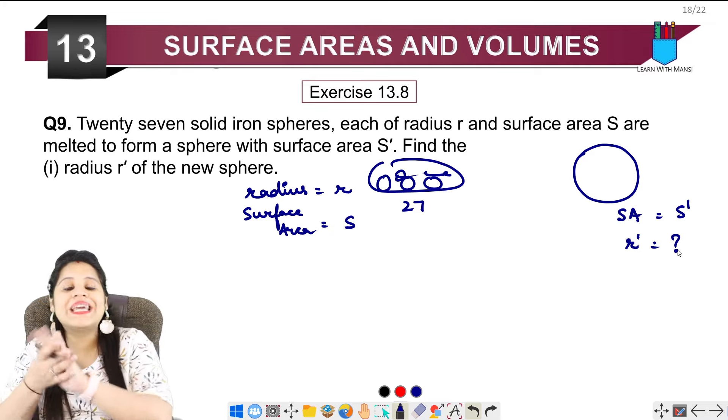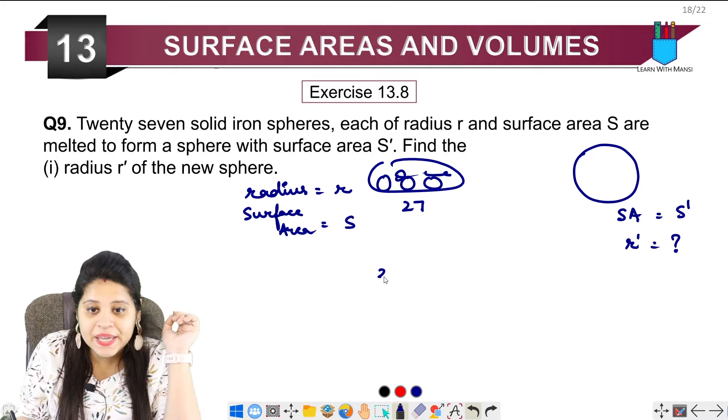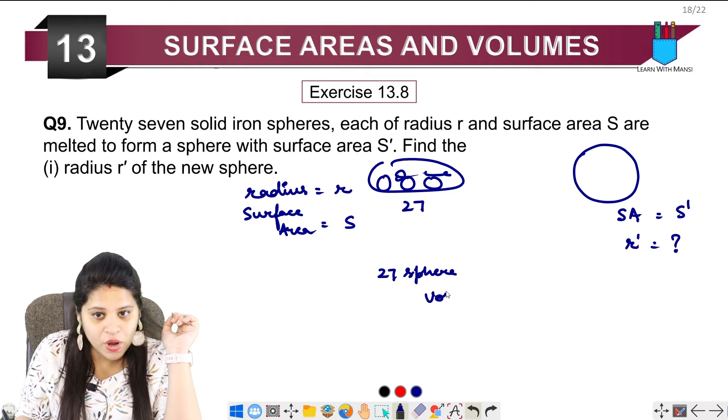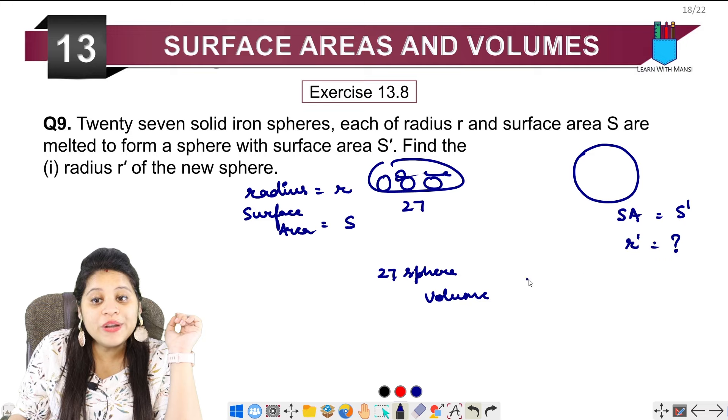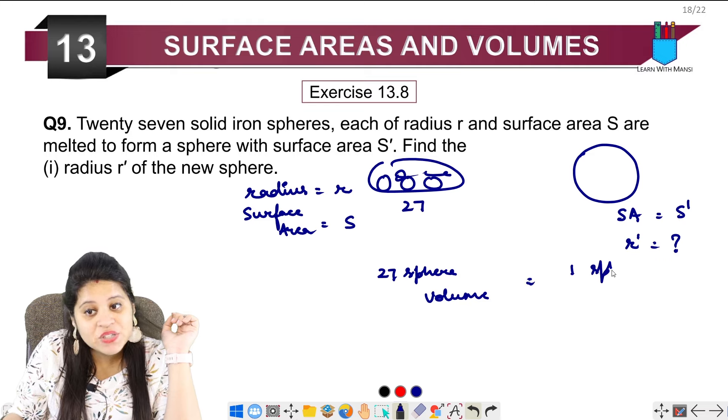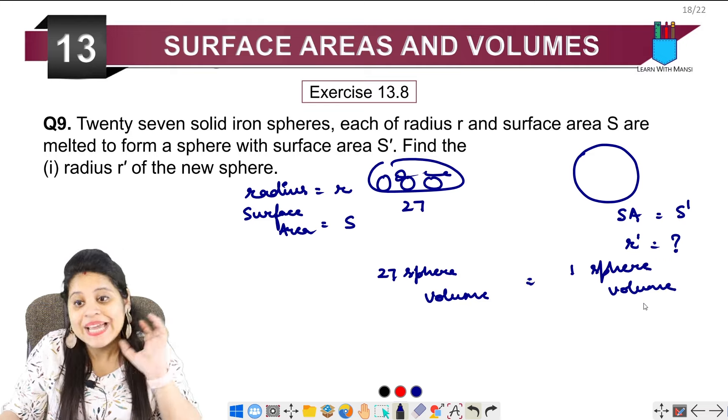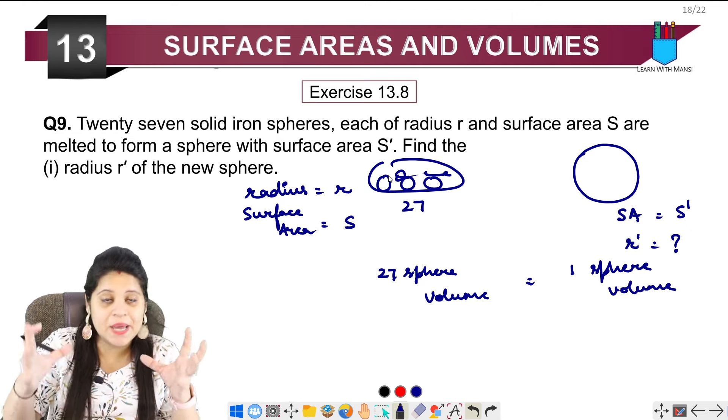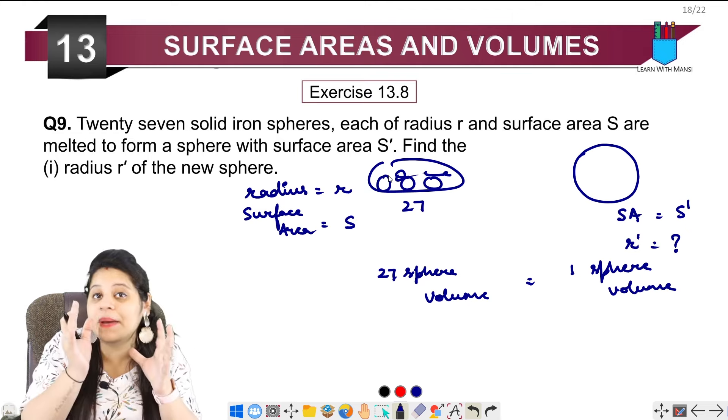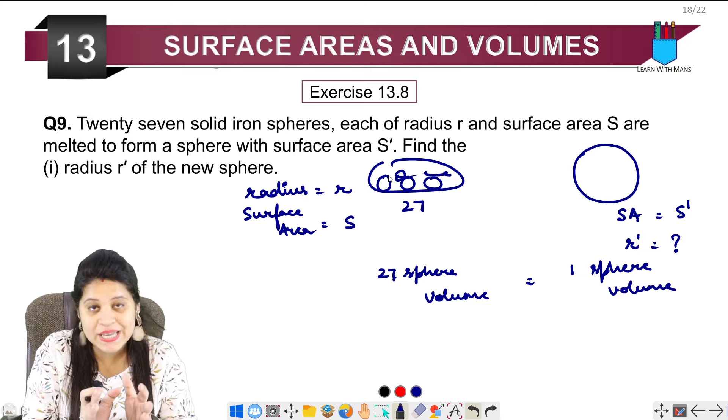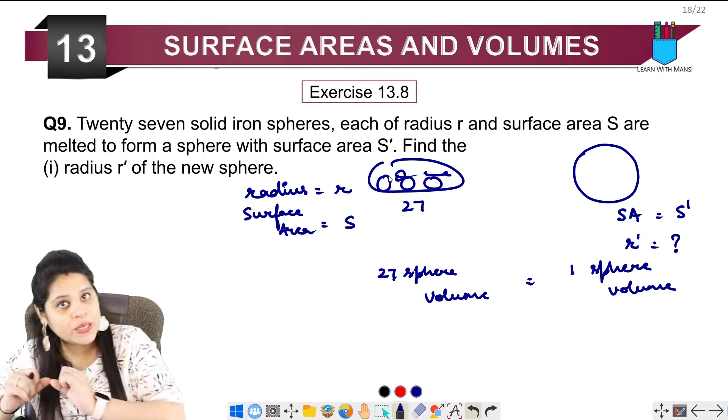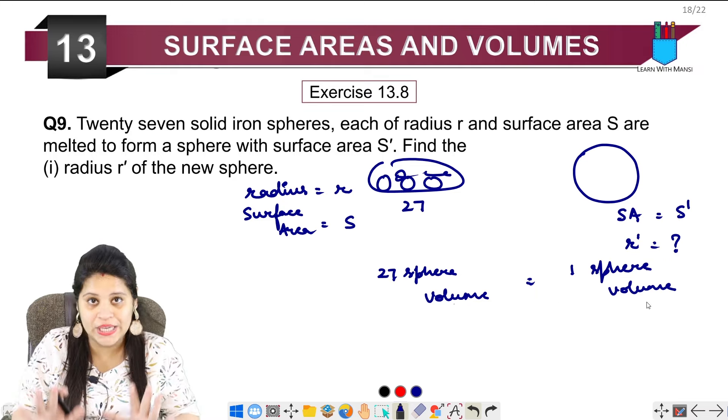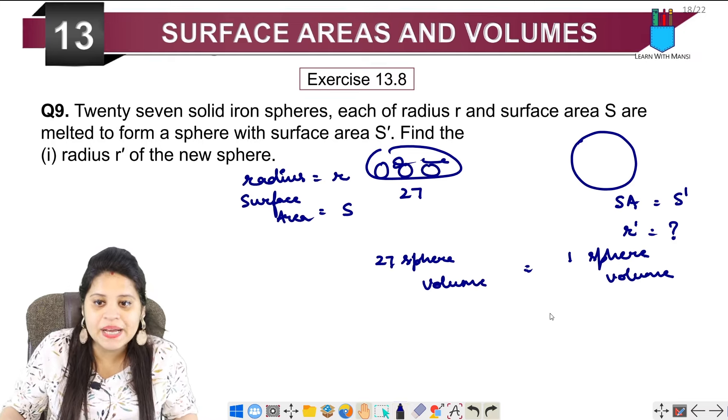The big sphere has surface area S dash, and we have to find its radius. The thing is, what are the common things in both? The volume of 27 spheres will be equal to the volume of 1 sphere. So, we will find that.